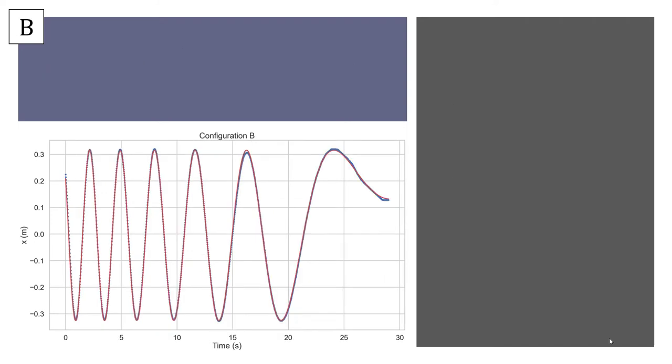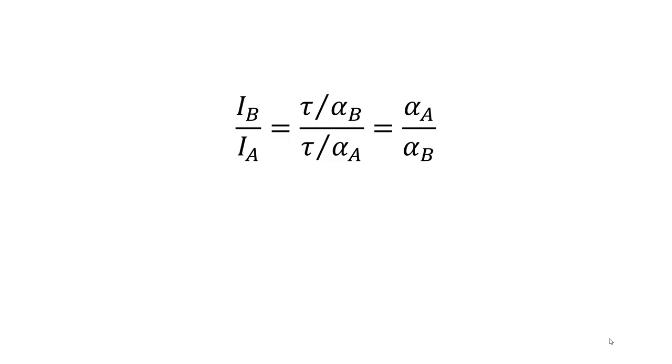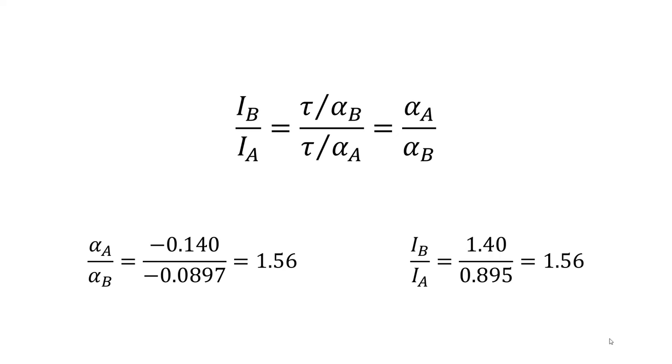Similarly for configuration B, it's also well fit by a frequency modulated sine wave with these parameters, and the angular acceleration here is negative 0.0897 radians per second squared. Now, the ratio of the moment of inertia should be the inverse of the ratio of the angular accelerations, and once again, we find that this is the case.